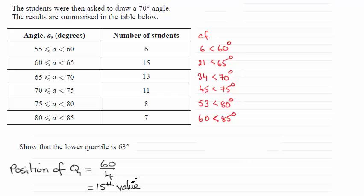We're looking for the 15th value, and that occurs in this second class interval here. We know that we've got 21 students that measured the angle less than 65 degrees. So the 15th value is clearly going to be in this interval.